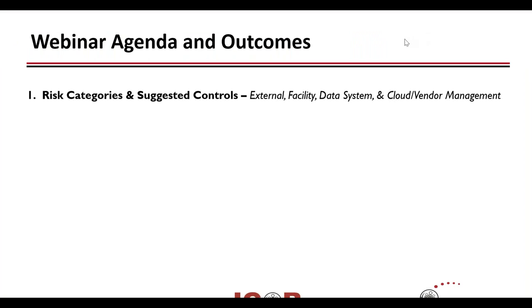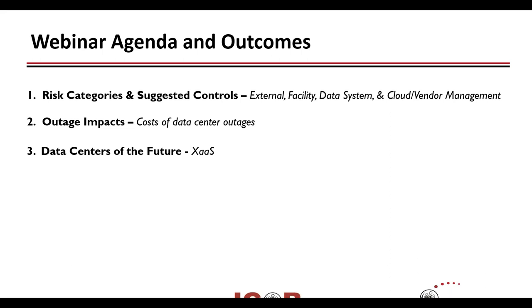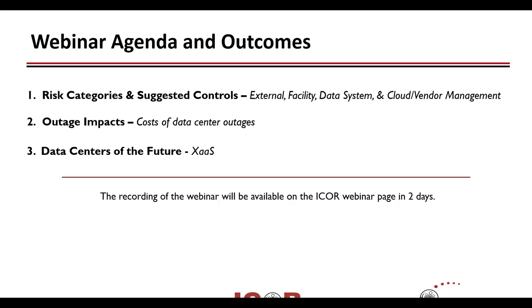Today we're going to talk about different risk categories and suggested controls for the data center. We will also discuss the impacts of outages and costs of data center outages to consider, and thirdly we're going to look at data centers of the future with everything as a service. The recording of this webinar will be available on the I-Corps webinar page in two days as well as on our YouTube page.